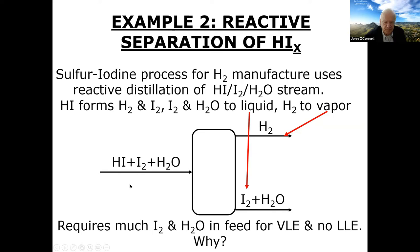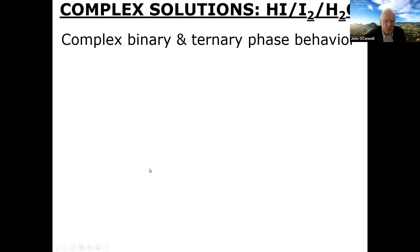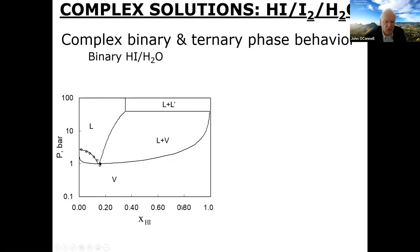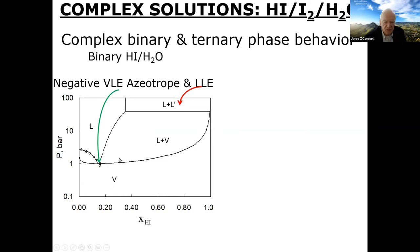The HIX system is surprisingly complex. You have to add a lot of iodine and water to get the VLE needed for distillation without liquid-liquid equilibrium appearing in the column. Looking at the binary pressure-composition diagram for HI and water: there's a vapor phase at low pressures, liquid phase at higher pressures, VLE in between — but at high pressure you get two liquids. Strangely, this is a negative-VLE azeotrope AND liquid-liquid equilibrium. A negative azeotrope suggests molecules like each other, while LLE indicates they prefer themselves — opposite behaviors in the same system as composition changes.